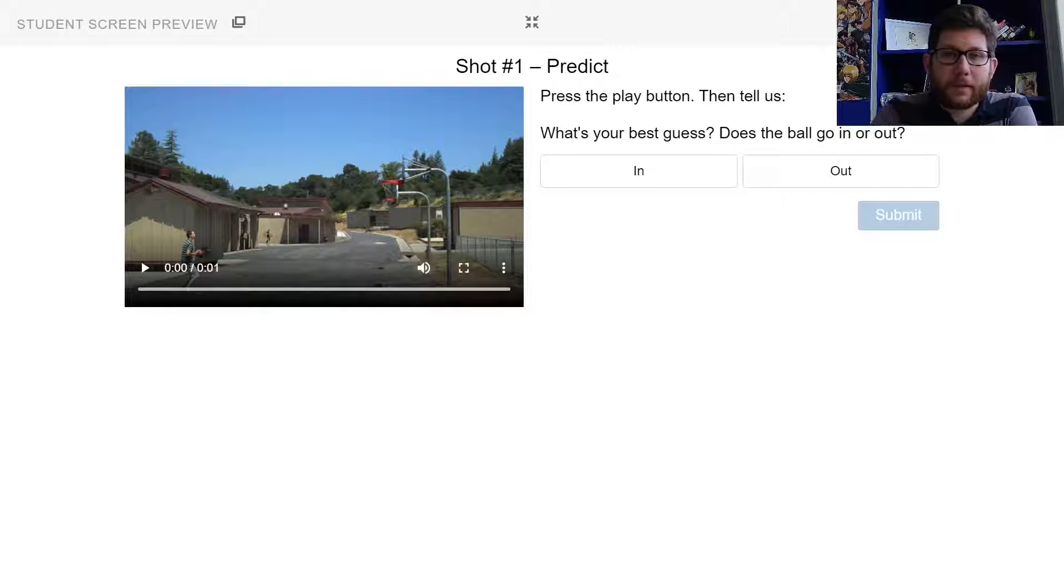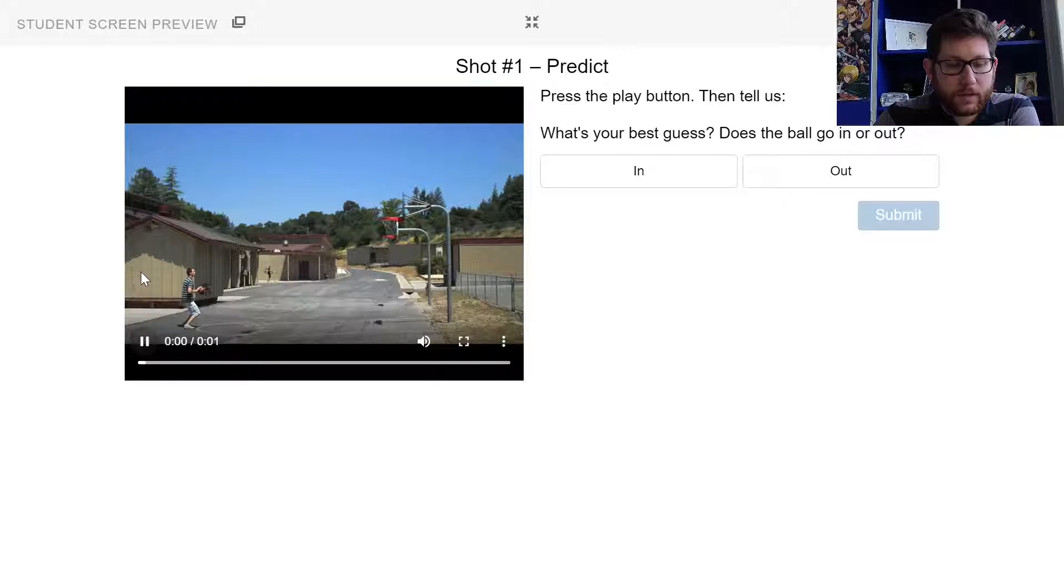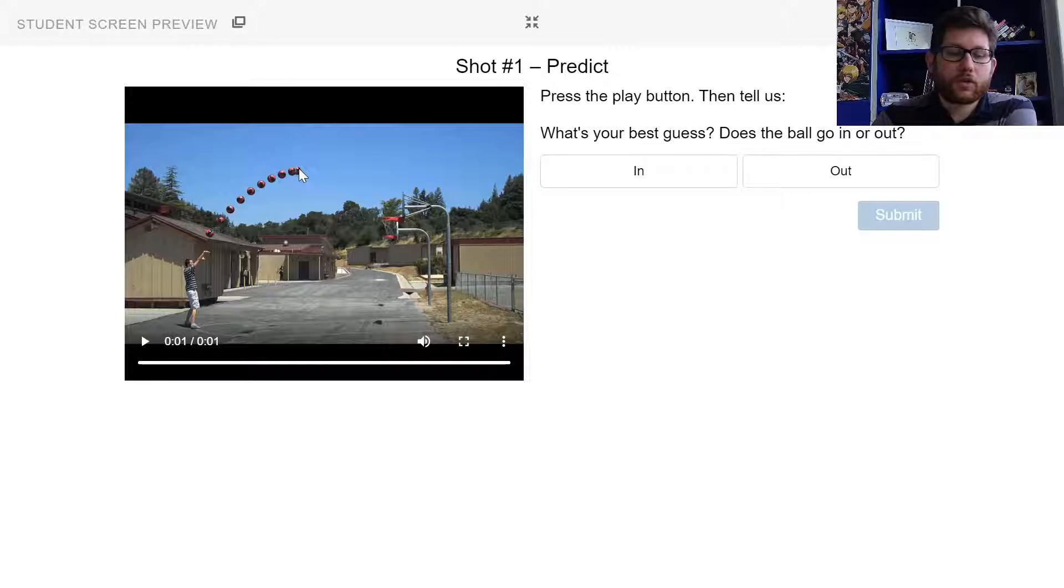Now here's the main portion of this assignment. The main portion of this assignment is to watch the video, watch the one-second video. And it's going to be a man shooting a basketball. And they pause the basketball halfway. And then your job is to guess whether or not it's going to go in the hoop just by the fact that they've kind of shown you the arc of the basketball.